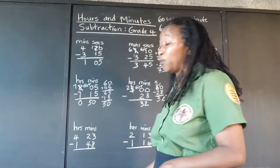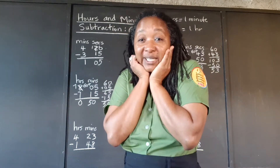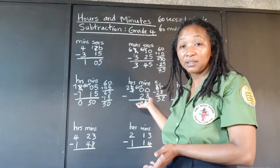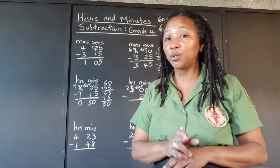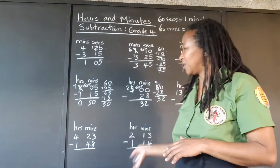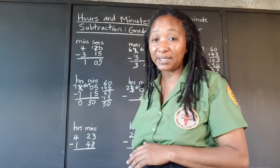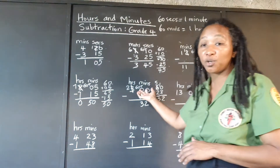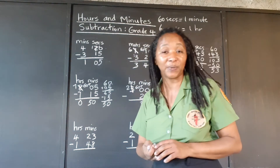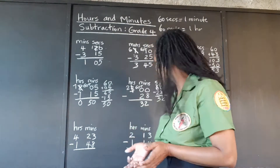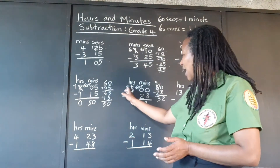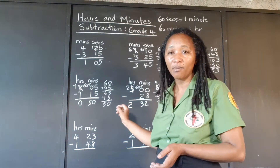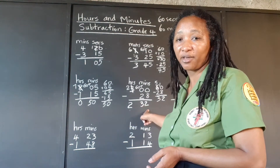We had 28 minutes to take away and no minutes at the top, but because we know this trick, all we have to do is go across to the hours, take 1, bring it over as 60 minutes, and then we were able to take out our 28. Now in the minutes we have 32, and we're not being asked to take any hours from the remaining 2 hours, so we just put that back down. The final answer is 2 hours and 32 minutes.